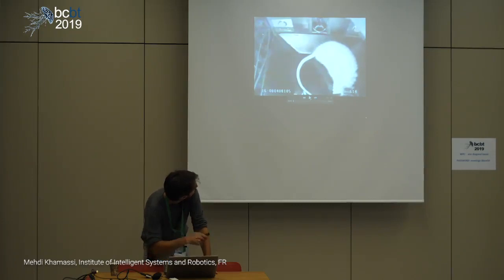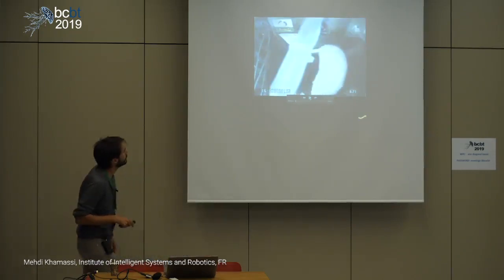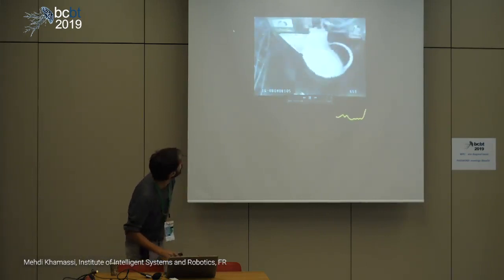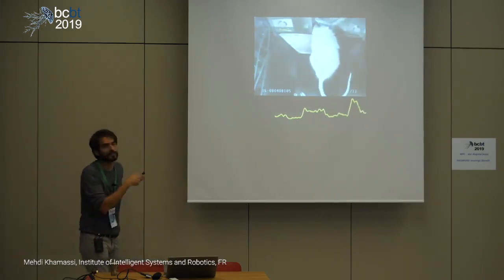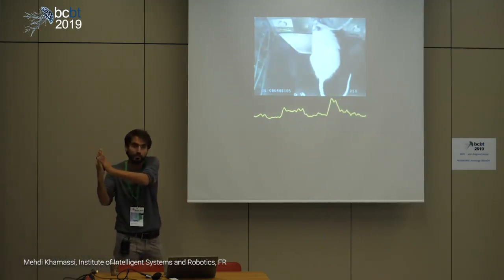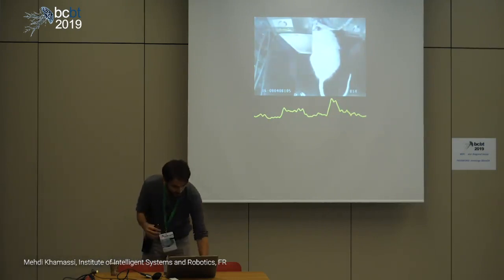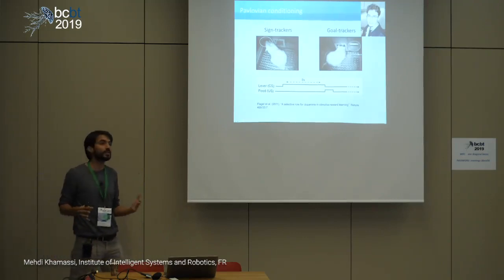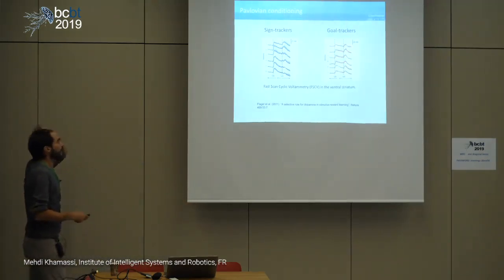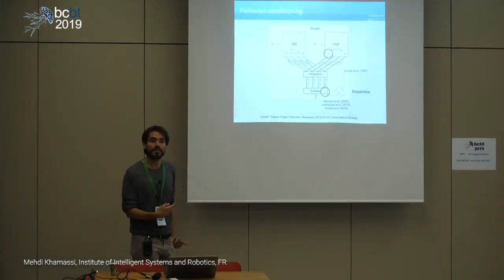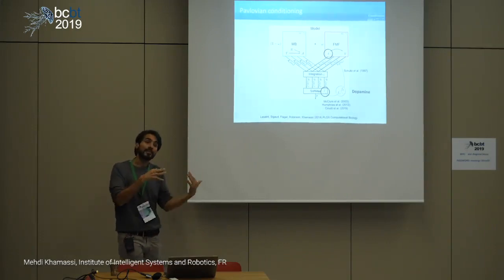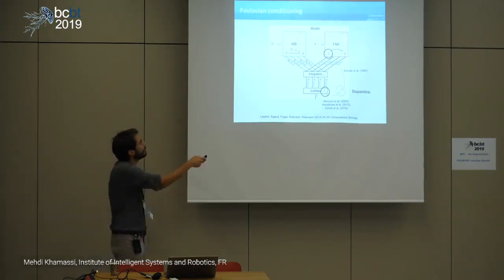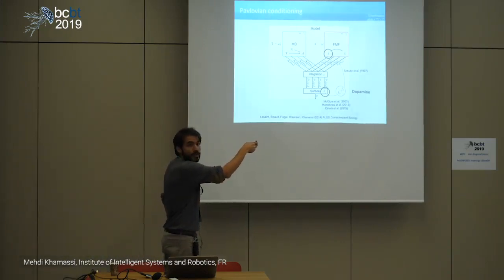In goal-trackers, at the time of the CS there was a small increase but not much, and then a big dopamine response to the reward delivery. As if the dopaminergic signal has not well propagated from reward to the CS. This reward prediction error hypothesis doesn't hold in all individuals.